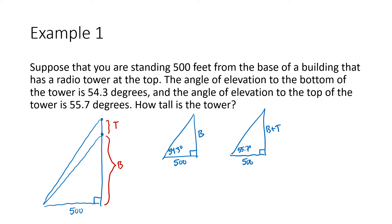Using tangent: the tangent of 54.3 degrees equals opposite over adjacent, which is B over 500. And the tangent of 55.7 degrees equals B plus T over 500. My plan is to use the first equation to find B, plug that result into the second equation, and then solve for T.